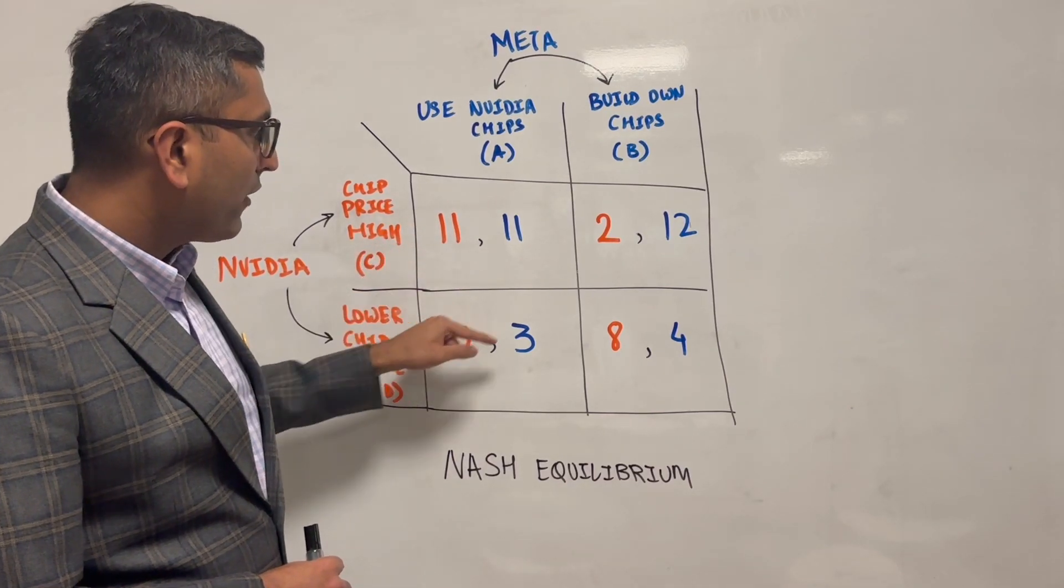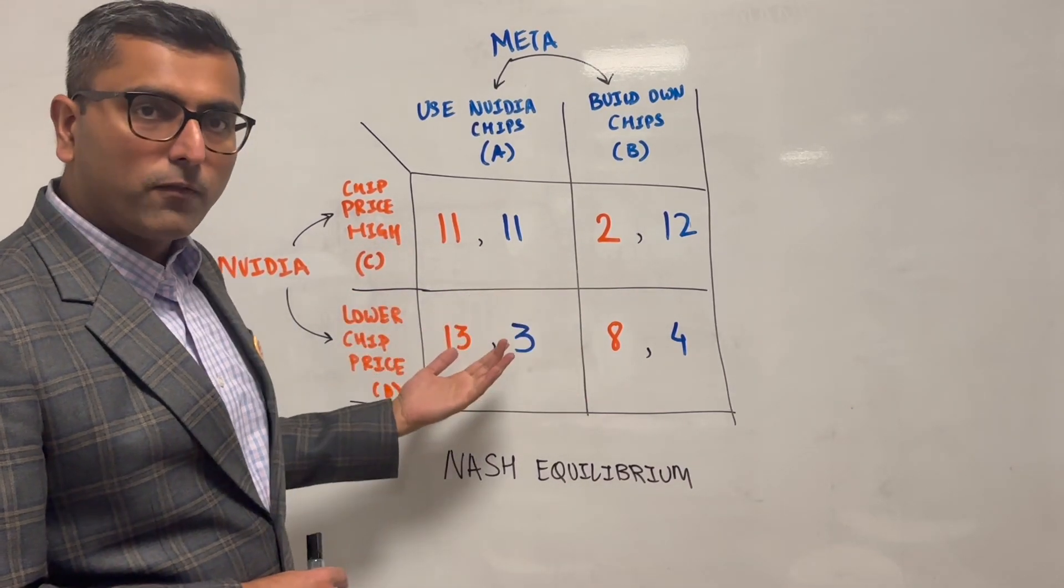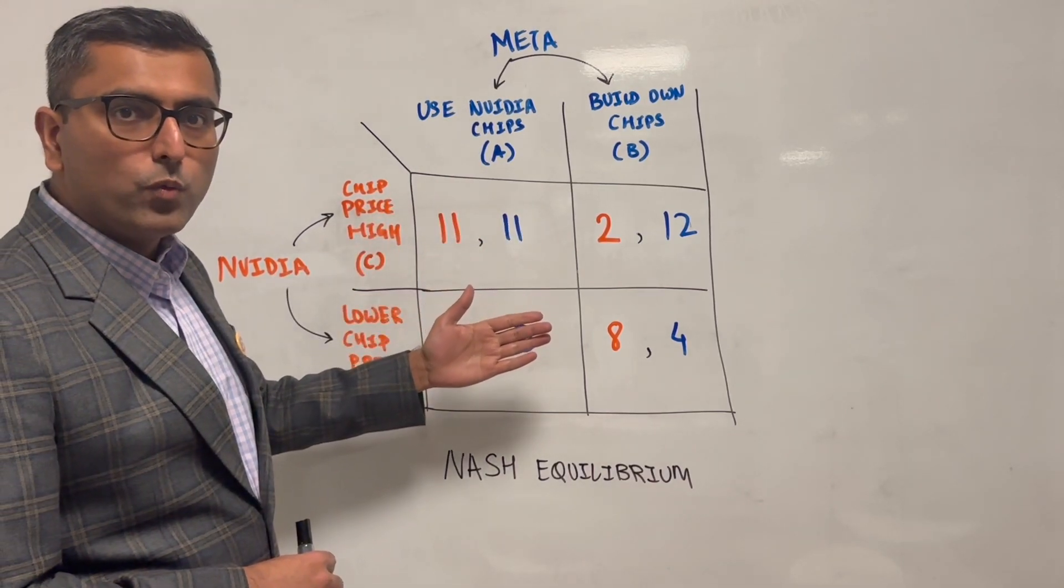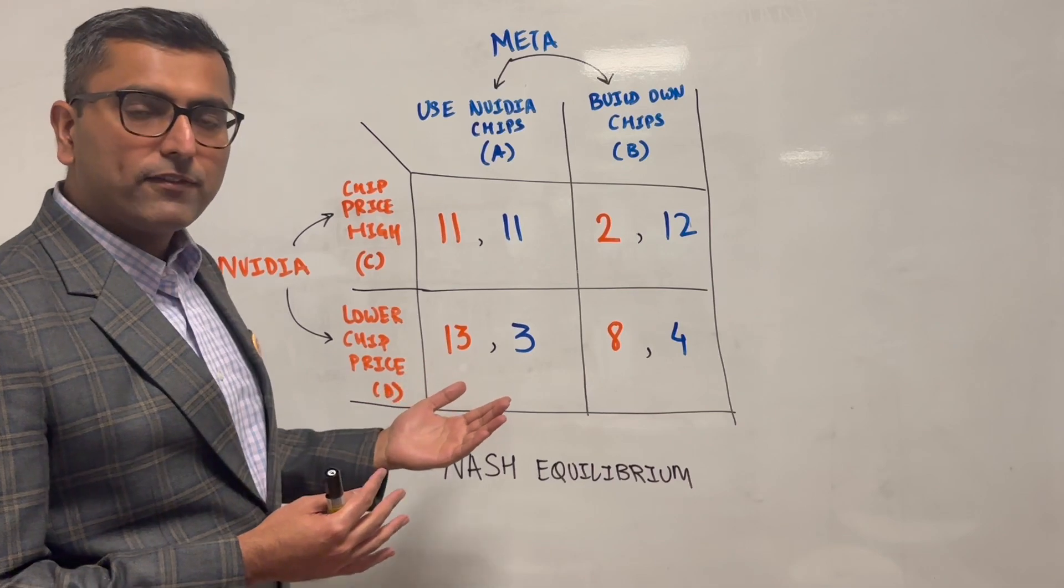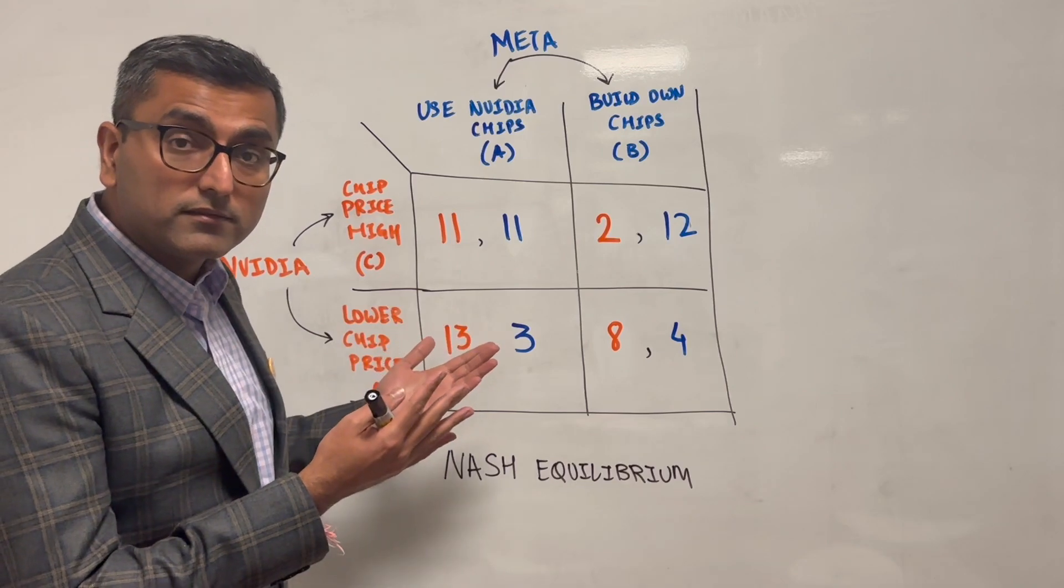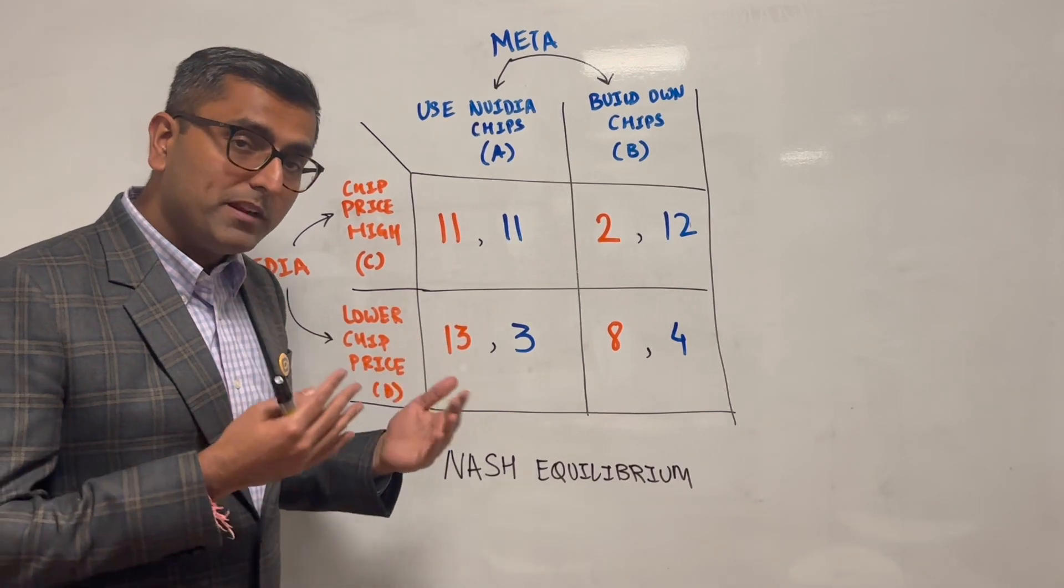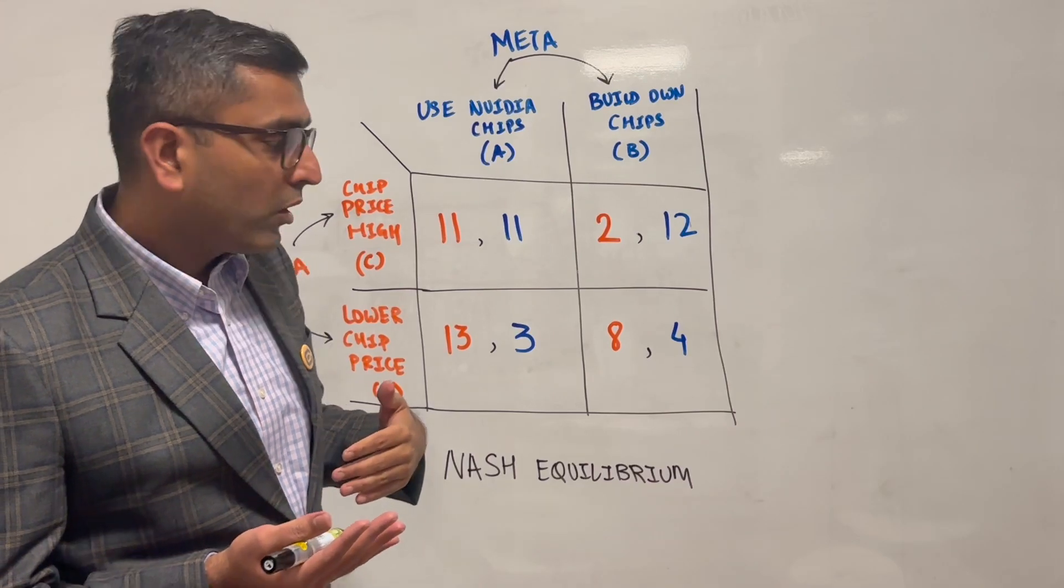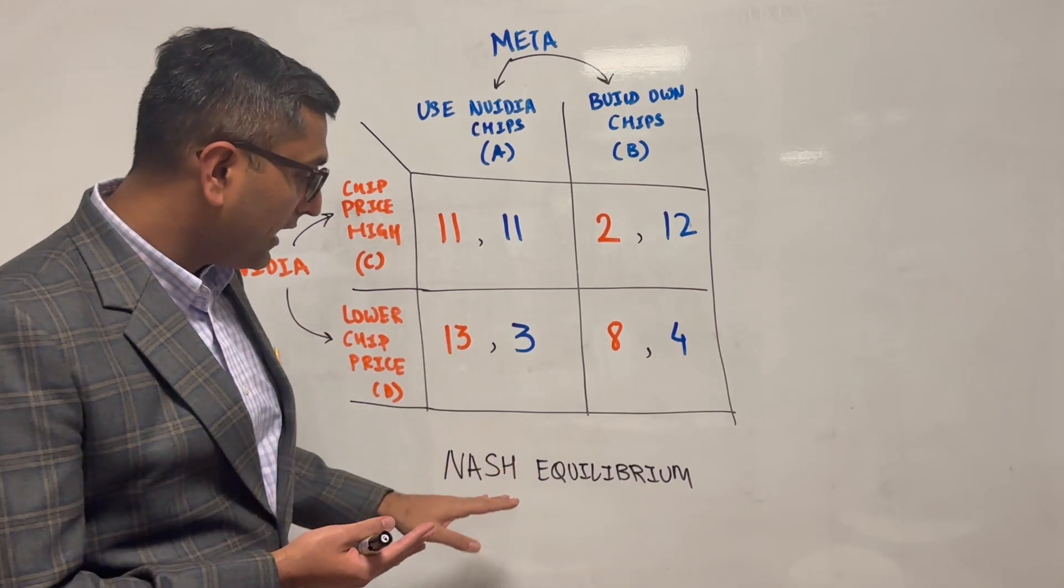So now we have payoffs for each of these four choices. Once we have these choices, we can start to find out if there is a strategy that works for everyone, a dominant strategy for one but not for another, or if there is an equilibrium, a Nash equilibrium.